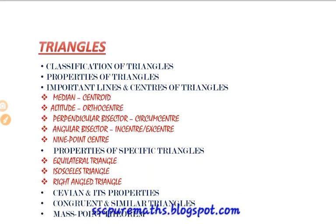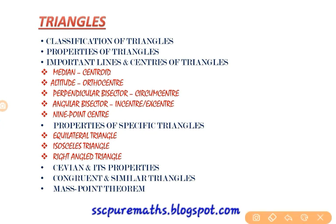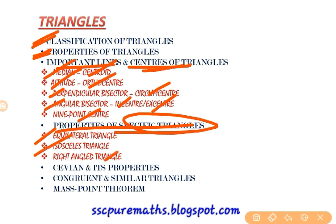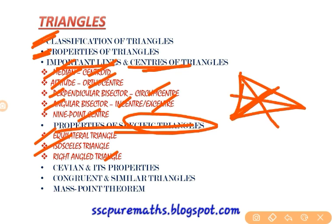Triangles is a very important and one of the lengthiest topics in geometry. I will cover: classification of triangles, properties of triangles, important lines like median, altitude, perpendicular bisector, and angular bisectors. Also important centers: centroid, ortho center, circum center, in-center, ex-center, and nine-point center. Then properties of specific triangles — equilateral, isosceles, and right angle triangles. Also, what is a cevian? A cevian is a line drawn from any vertex to the opposite side of the triangle. The properties of cevians are very important.